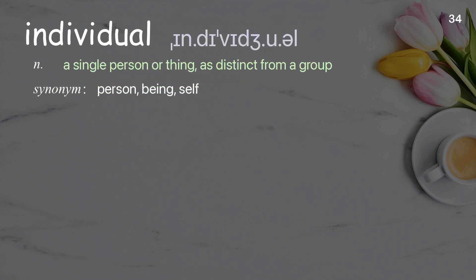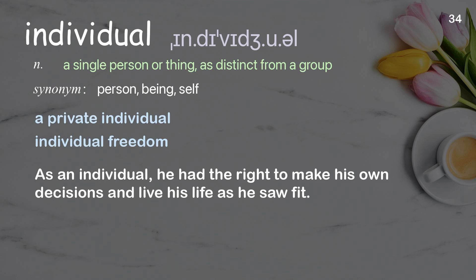Individual: a single person or thing, as distinct from a group. Examples: a private individual; individual freedom. As an individual, he had the right to make his own decisions and live his life as he saw fit.